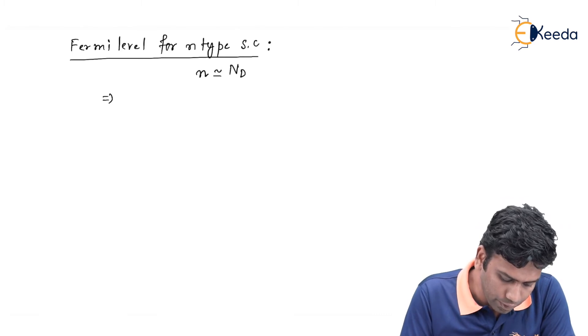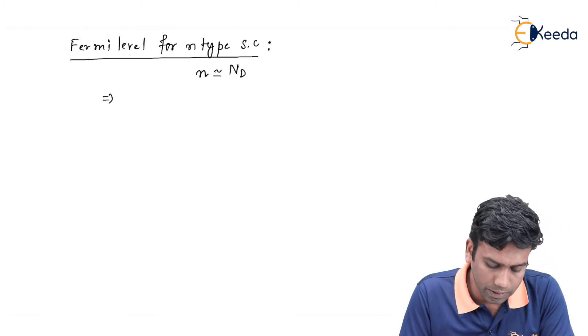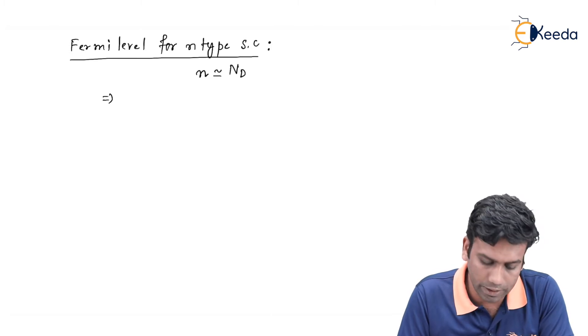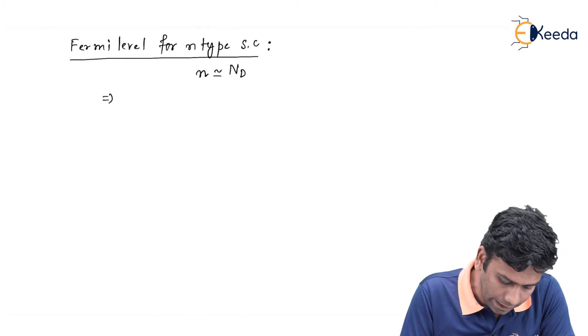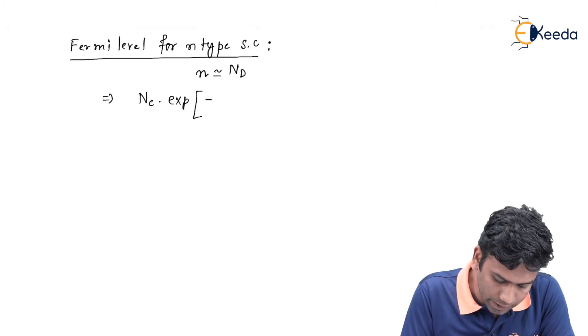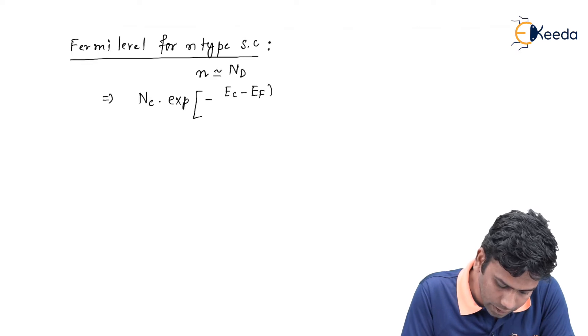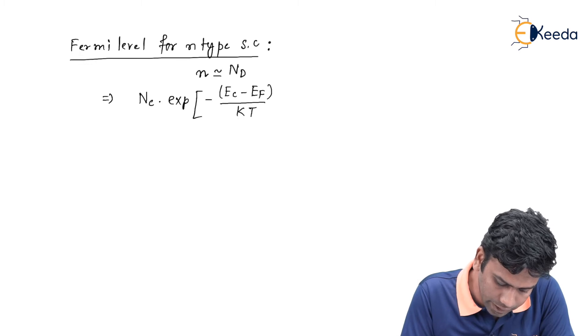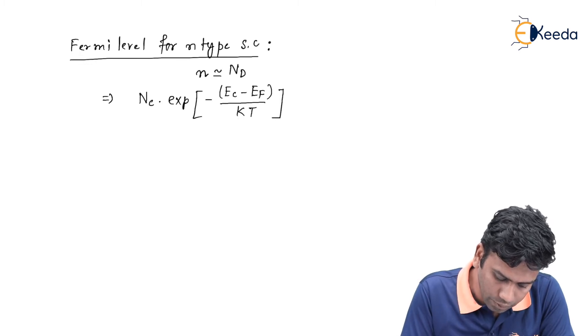Now we know the value of the electron concentration in an n-type semiconductor. So we can write that n is equals to Nc exponential minus Ec minus Ef divided by kT which will be equal to Nd.